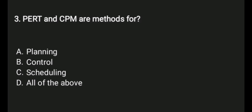3. PERT and CPM are methods for A. Planning, B. Control, C. Scheduling, D. All of the above.